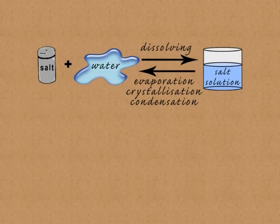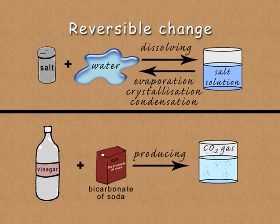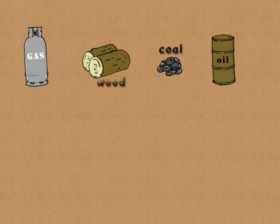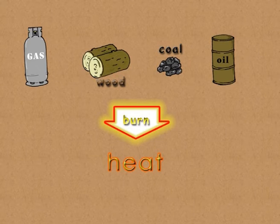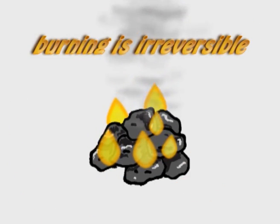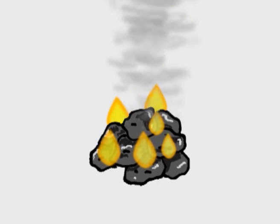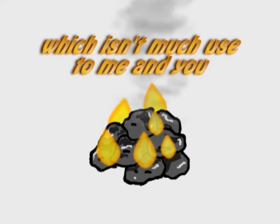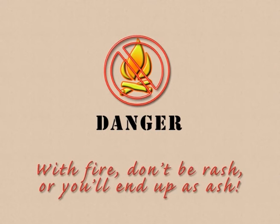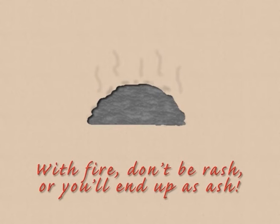Some changes that occur go back the other way. Others are more permanent and here to stay. Some materials like to burn but once they start there is no return. It generates a lot of CO2 which isn't much use to me and you. So when it comes to fire don't be rash or all you will create is a pile of ash.